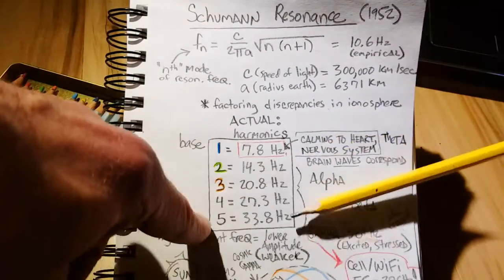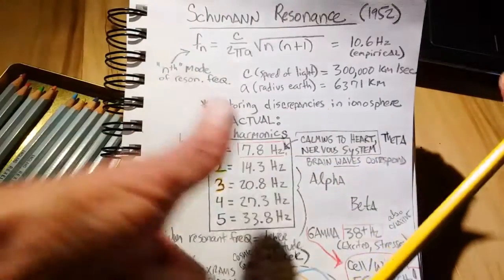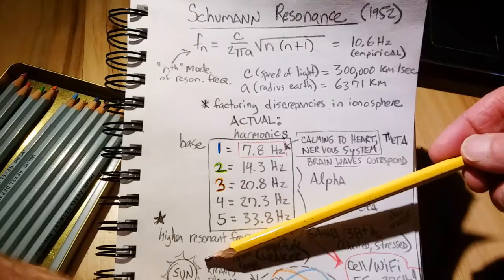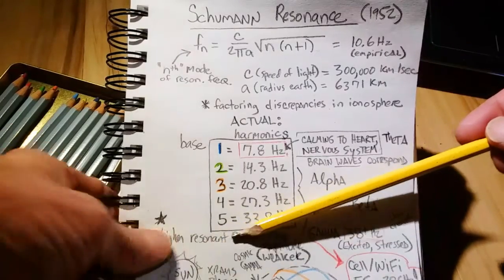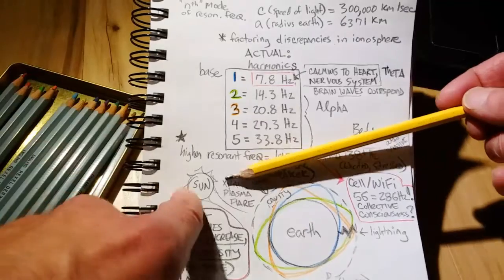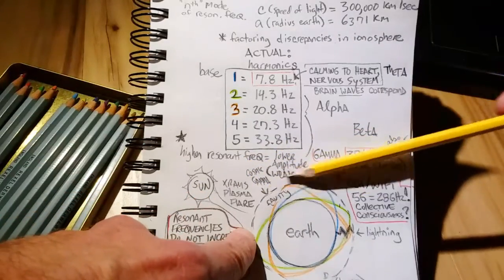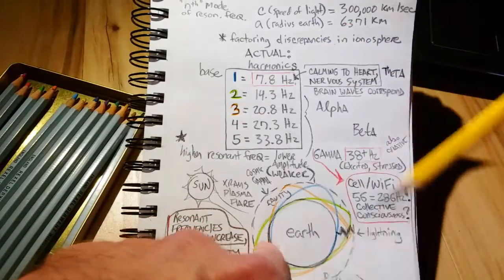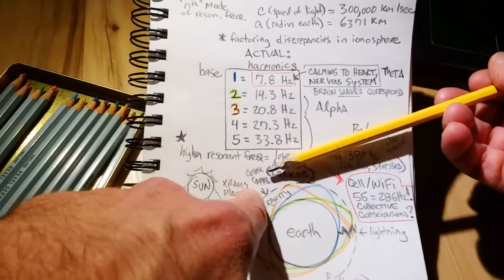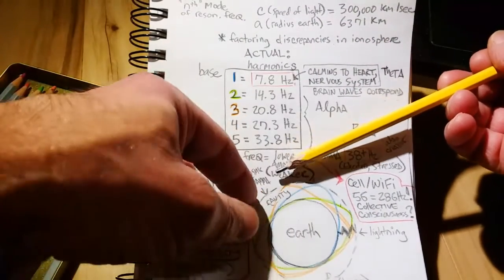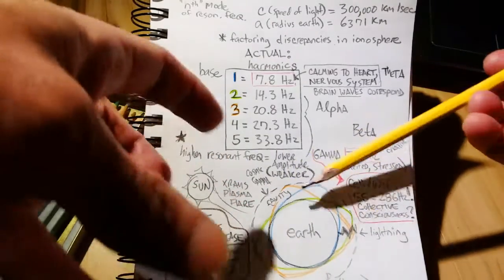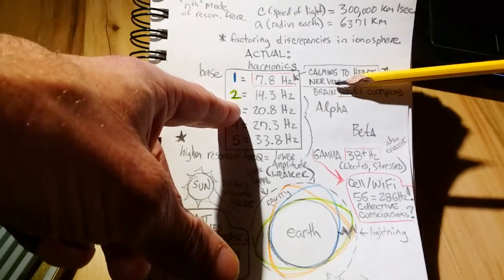It's just that perhaps the amplitude or the intensity has ramped up due to numerous factors, like it could be solar or plasma flares coming off the sun that could be bombarding our ionosphere and temporarily boosting up those amplitudes. Also, cosmic gamma radiation that can infiltrate our ionosphere can also temporarily change that up as well.